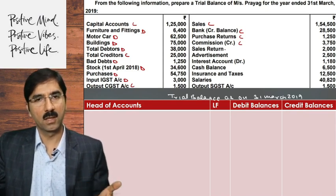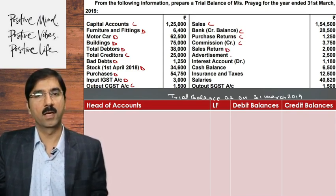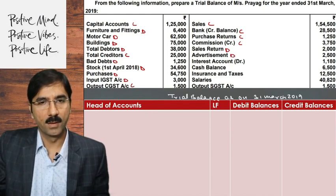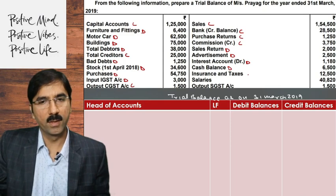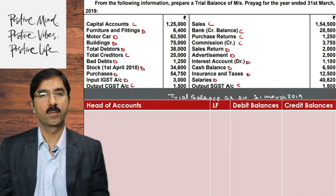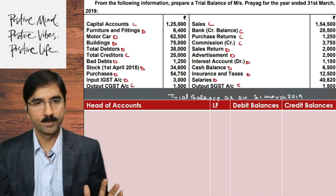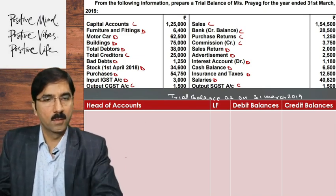Sales return — sales is income. So yeh aapka expense hai, debit. Interest account debit likha hua hai. Cash balance debit, debit, debit — debit and credit. Aayi baat samajh mein? Okay, chalo, phadha phad manate hain, without wasting any time.